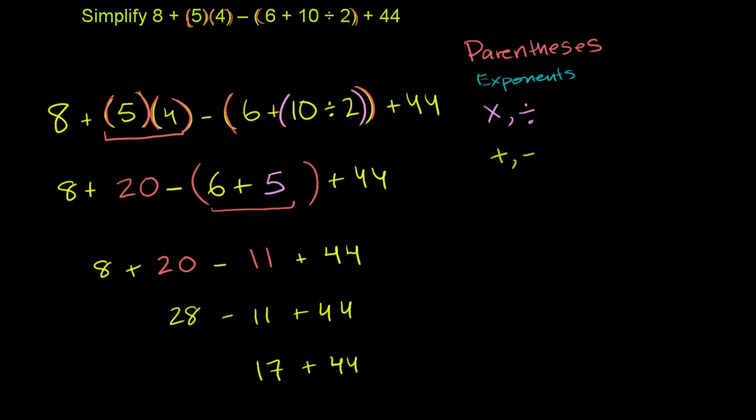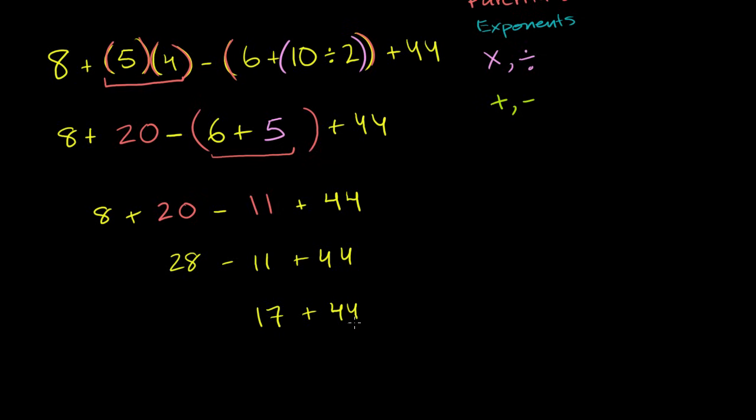And then 17 plus 44. I'll scroll down a little bit. 17 plus 44. 7 plus 44 would be 51. So this is going to be 61. So this is going to be equal to 61. And we're done.